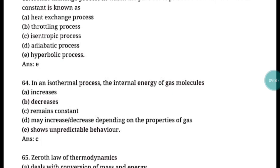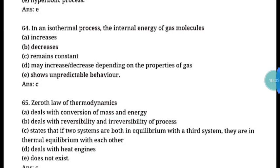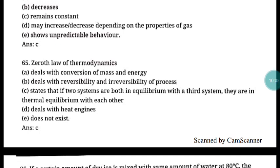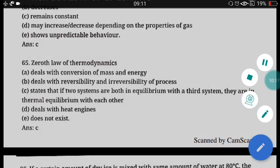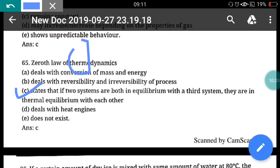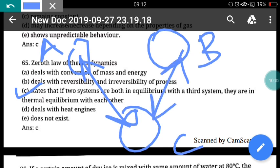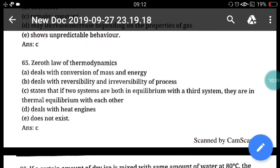Question 64: In an isothermal process, the internal energy of a gas molecule remains constant. Correct answer is option C. Question 65: The zeroth law of thermodynamics deals with temperature. It states that if two systems are both in thermal equilibrium with a third system, then they are in thermal equilibrium with each other. So if body A and C are in equilibrium, and B and C are in equilibrium, then A and B are also in equilibrium. Correct answer is option C.